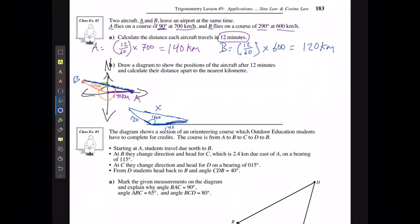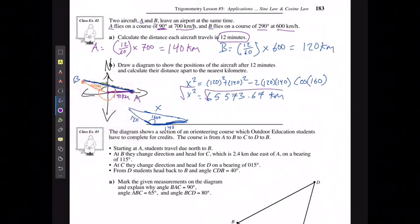I'm going to say that x squared is going to equal 120 squared plus 140 squared minus 2 times 120 times 140 cos of 160. x squared is going to equal approximately 65,573.67 kilometers. And I'm going to have to take the square root of both sides. So x to the nearest whole kilometer is going to be 256 kilometers, and there's my solution.